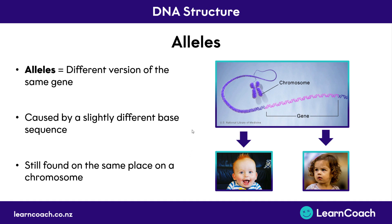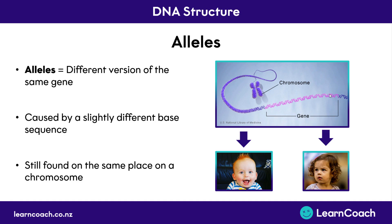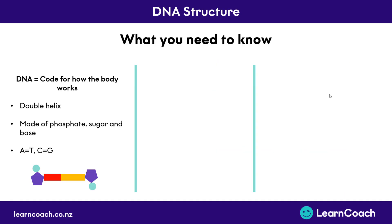It's also really important to remember that no matter what allele someone has, it is always found on the same place on the same chromosome. So let's just say this was chromosome number one — the hair colour trait will always be on the same place on chromosome number one, no matter what allele a person has. So whether they have ginger hair, brown hair, blonde hair, or black hair, the gene for hair colour will always be in the same place.